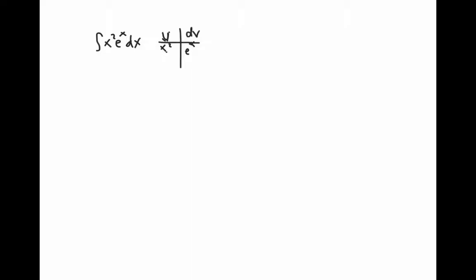Down the entire line of u we derive x squared and down the entire dv we integrate e to the x. We want to derive u until it reaches zero. Then we can cross multiply through the table.